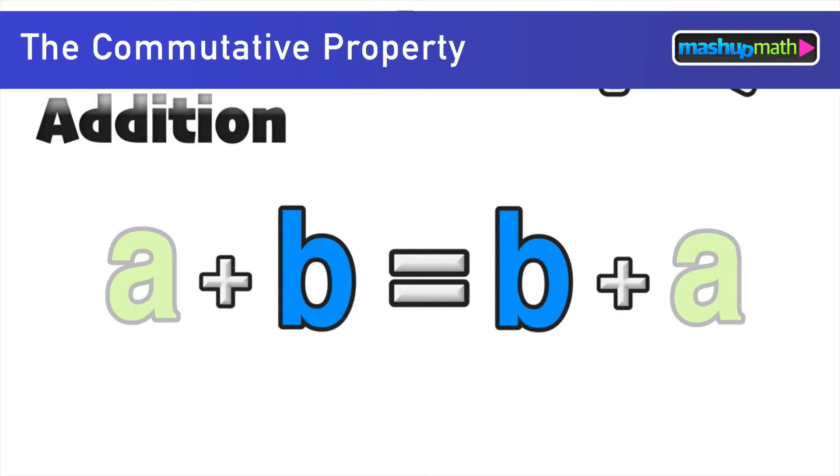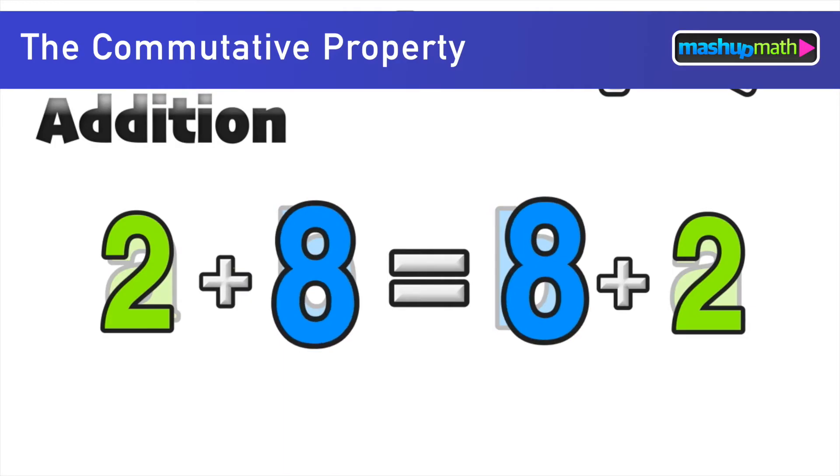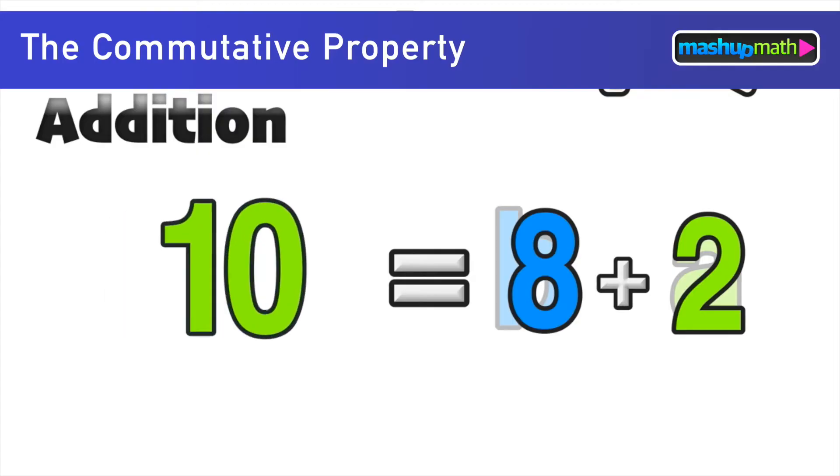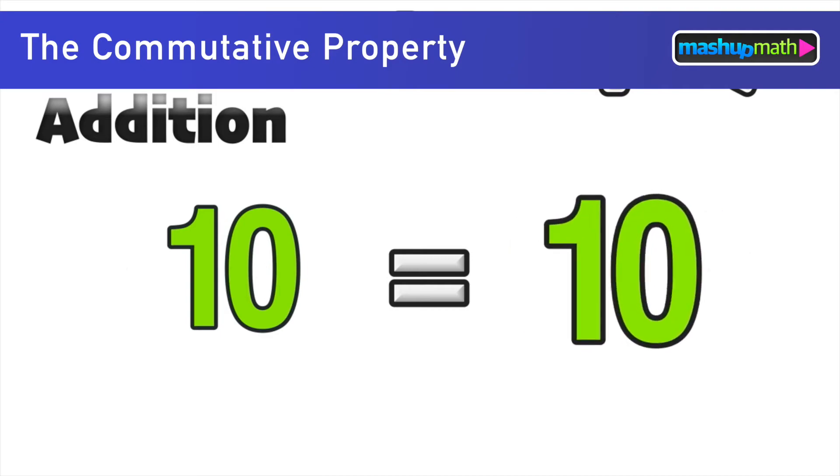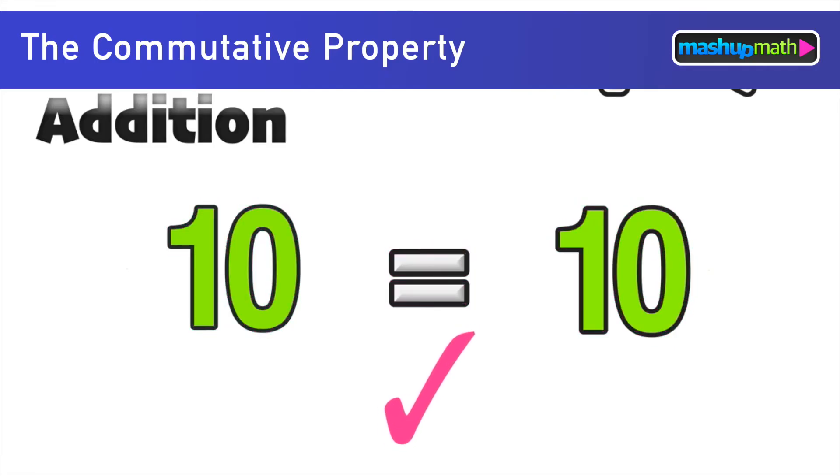For this example we'll use real numbers. We are going to replace the a term with the number two and we'll also replace the b term with the number eight. So two plus eight on the left side of the equal sign is equal to ten. And on the other side of the equal sign eight plus two is also equal to ten. And we know that ten is equal to ten so we can say that this is an example of why the commutative property holds under addition.